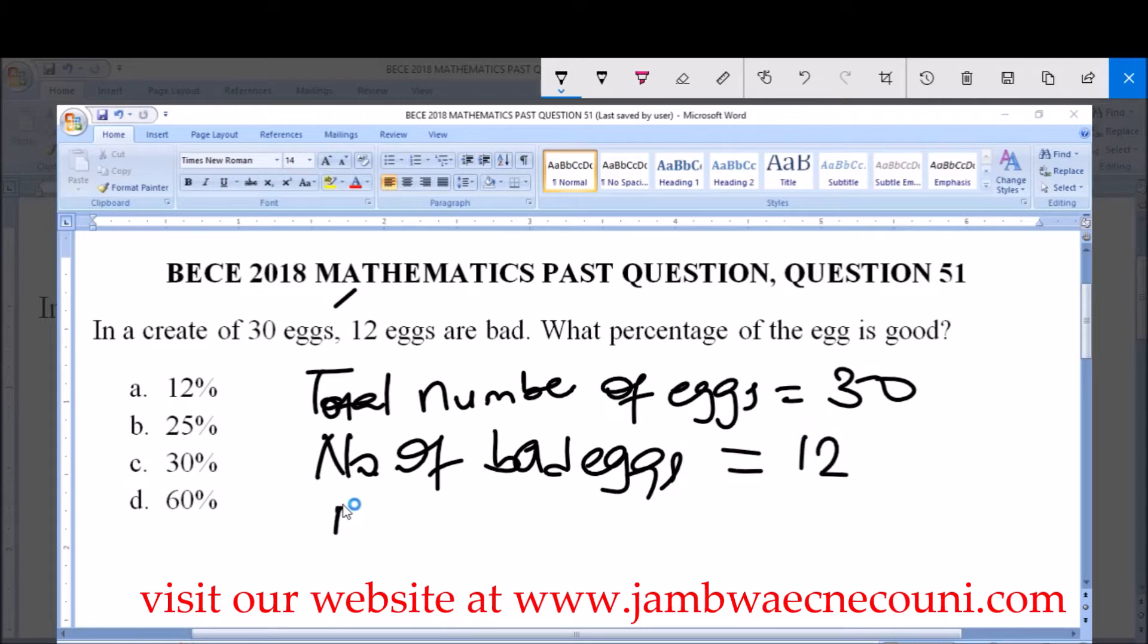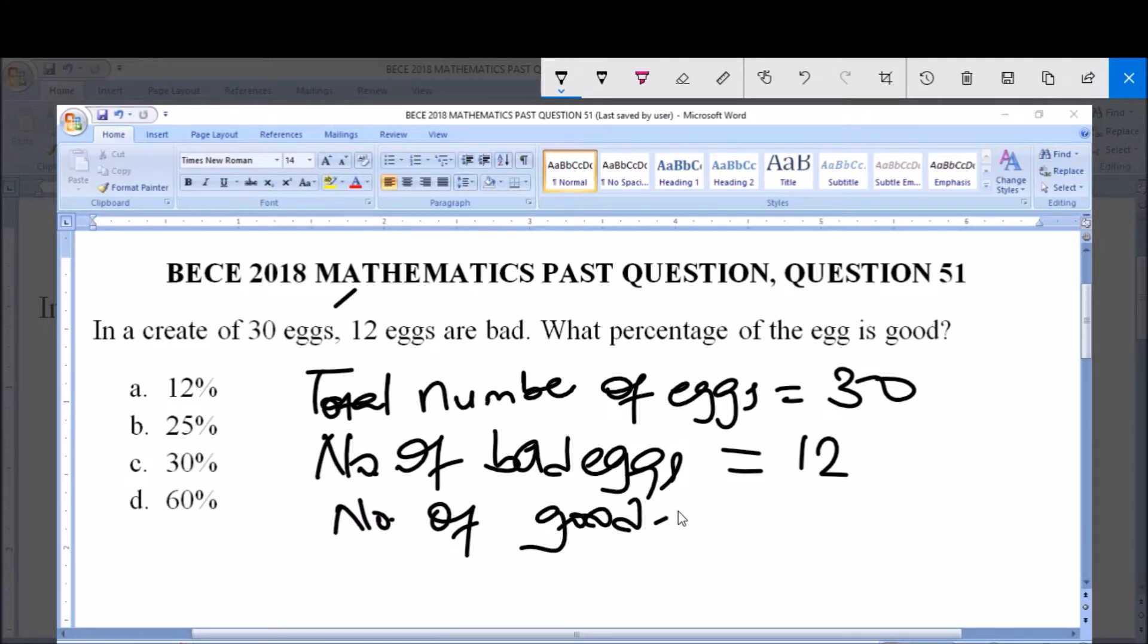Now the number of good eggs will be equal to 30 minus the number of bad eggs, which will give us 18. That means 18 eggs are good.